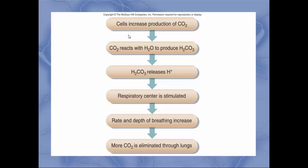A flow chart illustrates this: cells increase CO₂ production → CO₂ mixes with water in cells → carbonic acid (H₂CO₃) forms → carbonic acid breaks apart releasing hydrogen ions → respiratory center in brain stem activates → breathing rate and depth increase → CO₂ is eliminated faster.